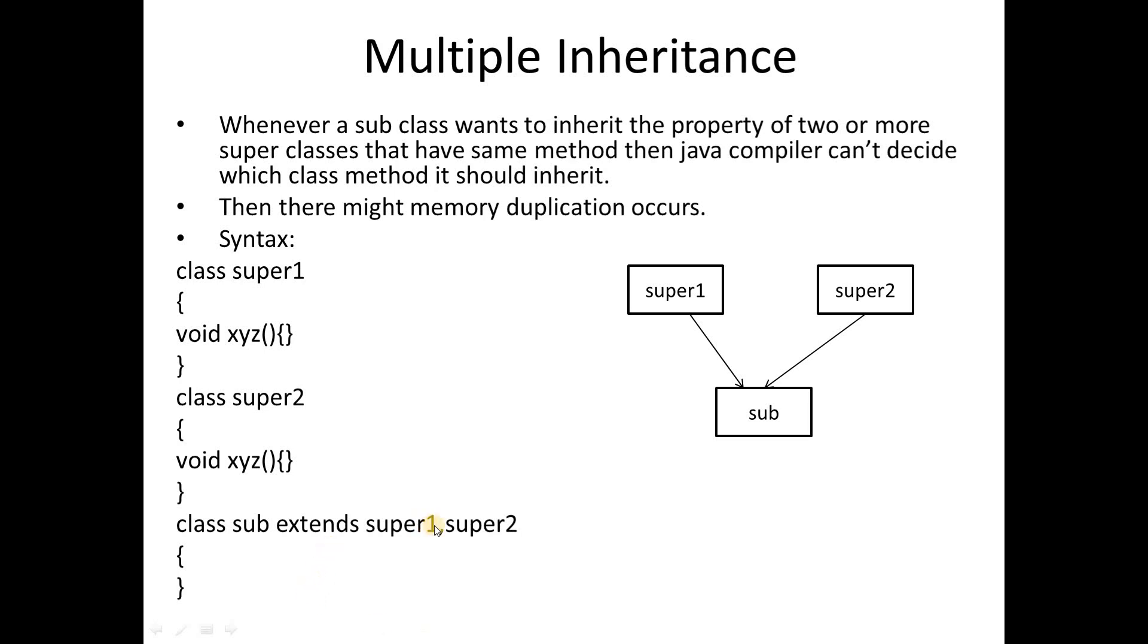In this case, our subclass is confused because it extends from both super classes super1 and super2, and both have the same method xyz. So our subclass is confused about which class provides this particular xyz method to it, and that's why multiple inheritance is not supported in Java.